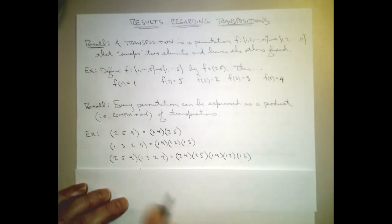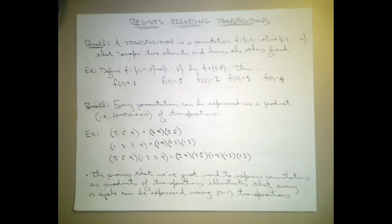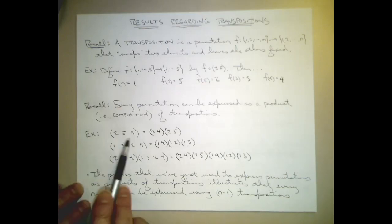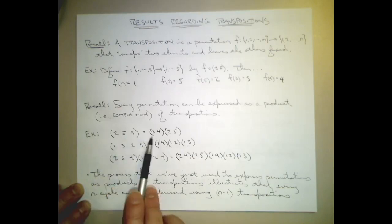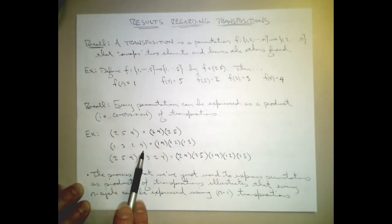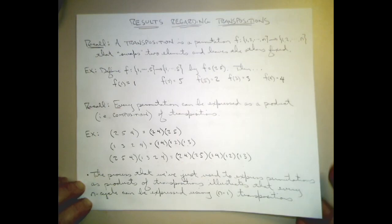Notice the process we were using to write a function as a product of transpositions illustrates that every n-cycle - an n-cycle is a cycle with n elements in it, so a 3-cycle, and a 4-cycle, and a product of a 3-cycle with a 4-cycle - can be expressed using n minus 1 transpositions. This 3-cycle can be written as a product of 2 transpositions. This 4-cycle can be written as a product of 3 transpositions.